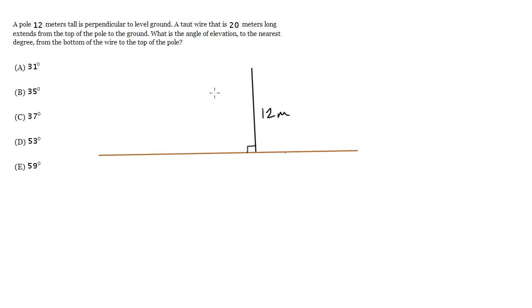We're told it's 12 meters tall. A taut wire that is 20 meters long extends from the top of the pole to the ground. This wire is going to extend at some angle into the ground, so let's just draw it like this. We're told that this is 20 meters long.